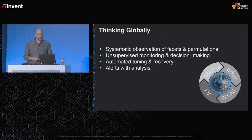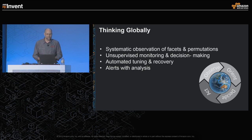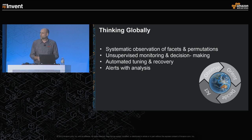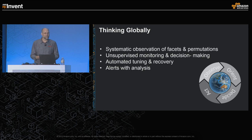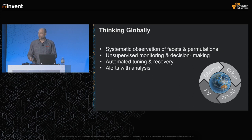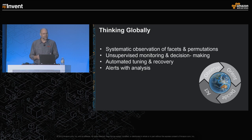All of these together — anomaly and outlier detection and canary analysis — are coming together into a vision for where we want to go. Thinking globally, as we expand across the world, we can't have humans looking at every country, every ASN, every cache, or every service. We have to get better at doing this automatically. Our goal is to systematically observe every facet of our ecosystem, look at interesting permutations, detect brokenness, know what's normal, and notice deviations from normal. We prefer unsupervised monitoring and decision-making, and we'll apply automation around auto-tuning and automated recovery — and if we do need to get humans involved, give them as much information as possible to iterate through the OODA loop as quickly as possible to alleviate customer pain.